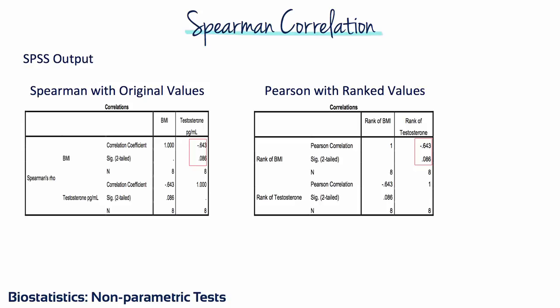The SPSS output shows the Spearman Rank correlation of negative 0.643 and a p-value of 0.086. To demonstrate that the Spearman correlation is just the Pearson correlation applied to rank data, the output for the Pearson correlation applied to the transformed ranked variables — note the variable names now include 'rank' — gives the same correlation and p-values as the Spearman Rank correlation.